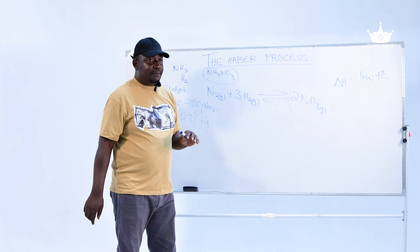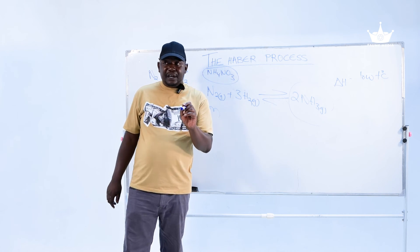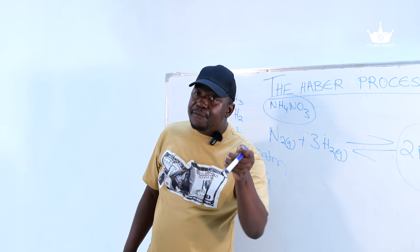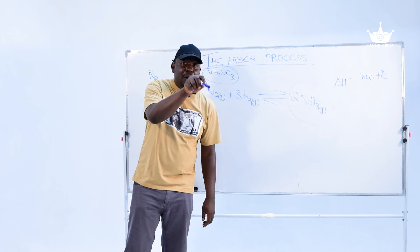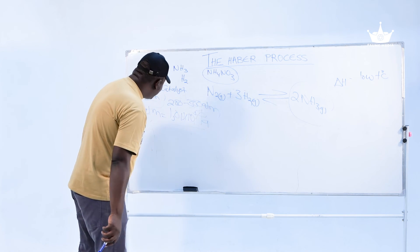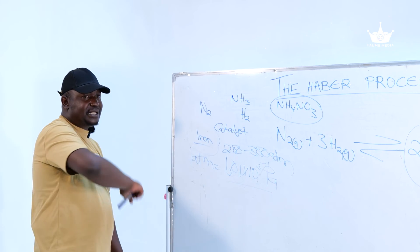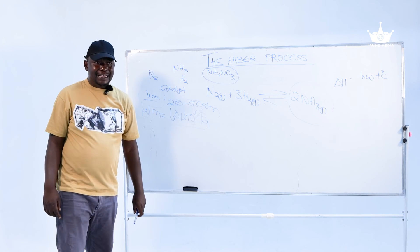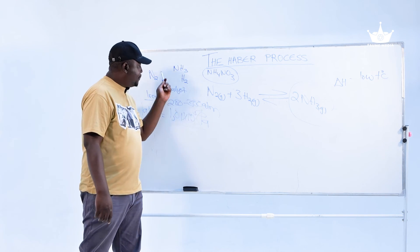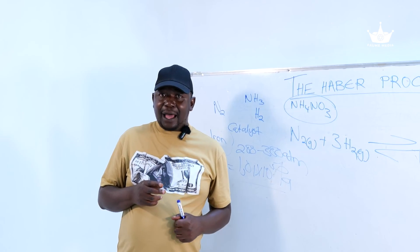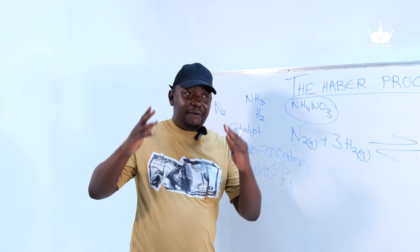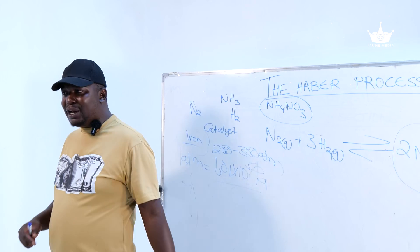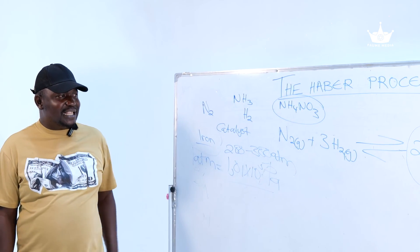Nitrogen is extracted via liquefaction and fractional distillation of air — we will have future videos elaborating further on how that process transpires. Hydrogen is produced from the electrolysis of water, and we will also have future videos explaining how the electrolysis of water actually transpires.